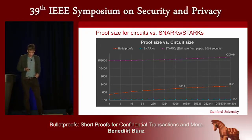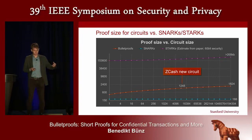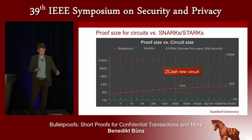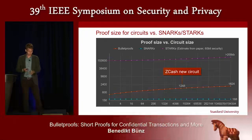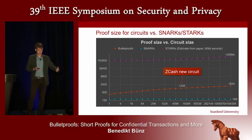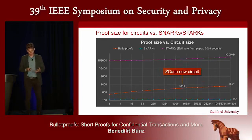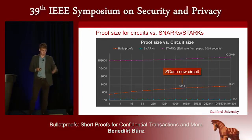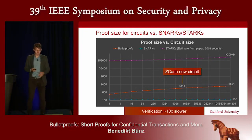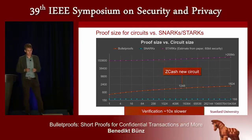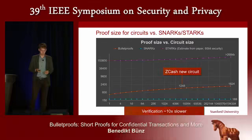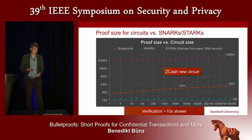Zcash, a cryptocurrency with the strongest privacy properties, currently uses SNARKs. If they used Bulletproofs with their new circuit, the transaction would be about 1.3 kilobytes. However, the big downside versus SNARKs is that the verification time for Bulletproofs is linear in the size of the circuit asymptotically, whereas for SNARKs verification time is constant. In practice, verification would be about a factor of 10 slower.